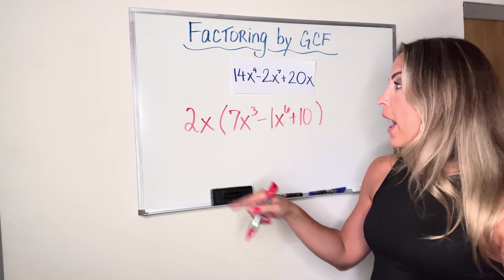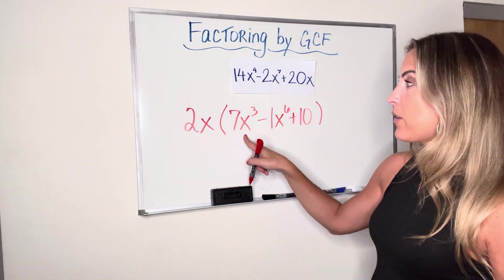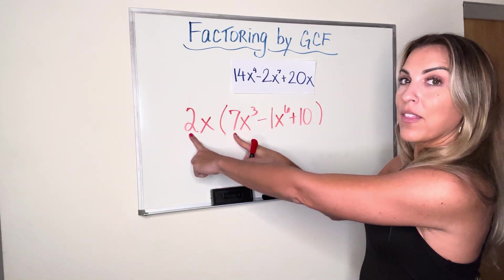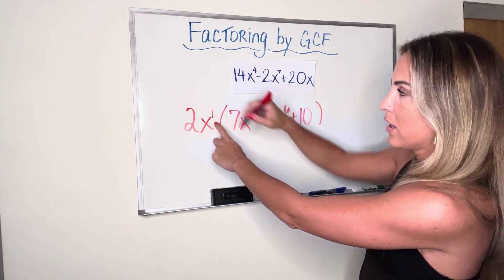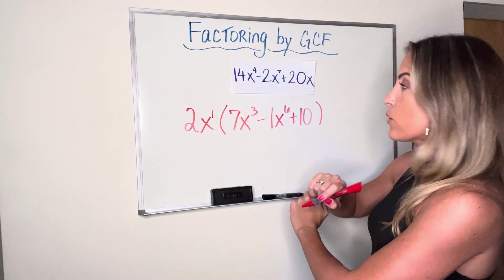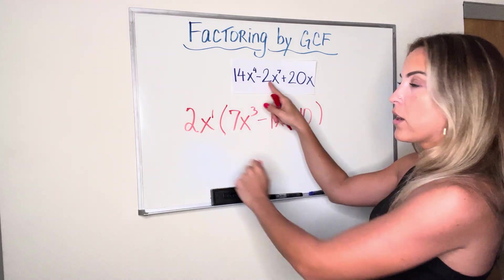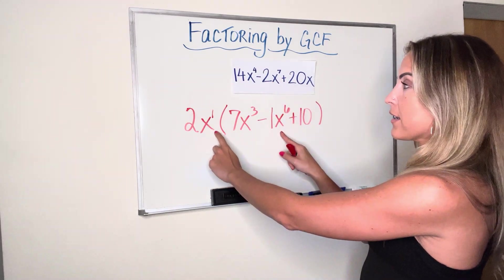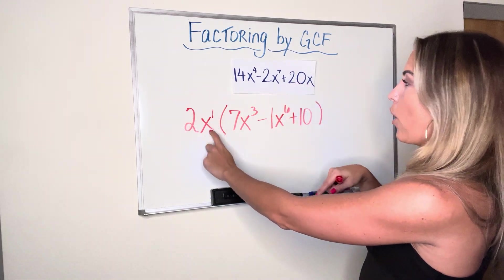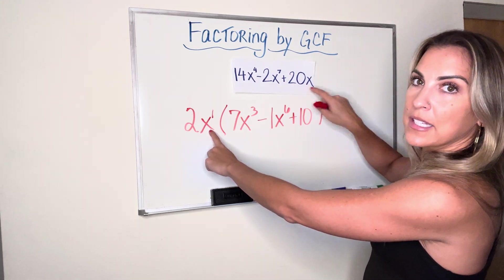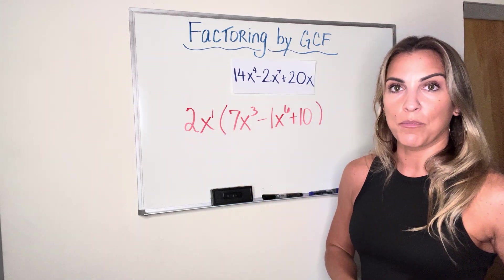And a quick check, if we distribute back, 2x times 7x³, that's 14. And again, that multiplication rule says I keep the base and add the exponents. 1 plus 3 gives me 4. Nice quick check for you. 2 times negative 1 is negative 2. Keep my X. Add my exponents. There's that 7. 2 times 10 is 20. I only have an x to the first. And that's exactly what I had in my original expression.